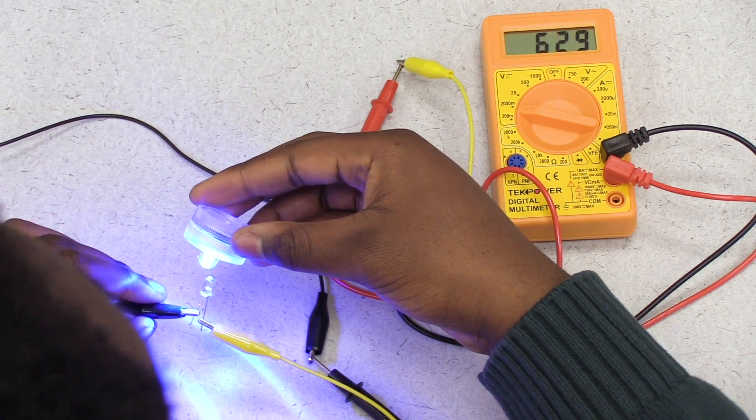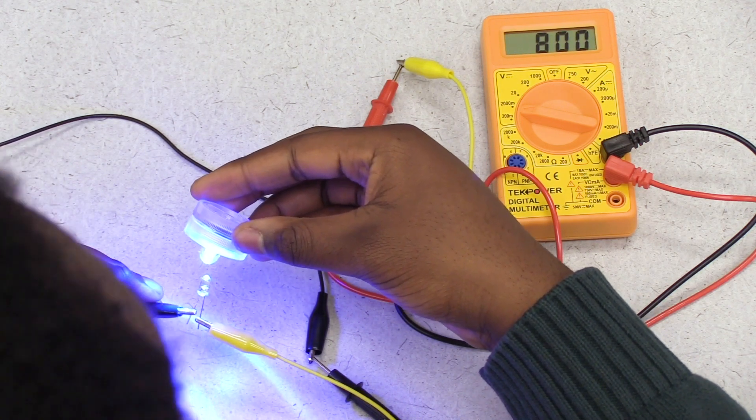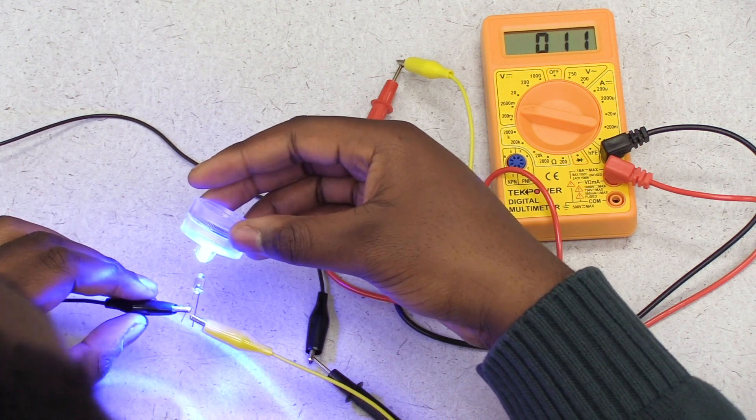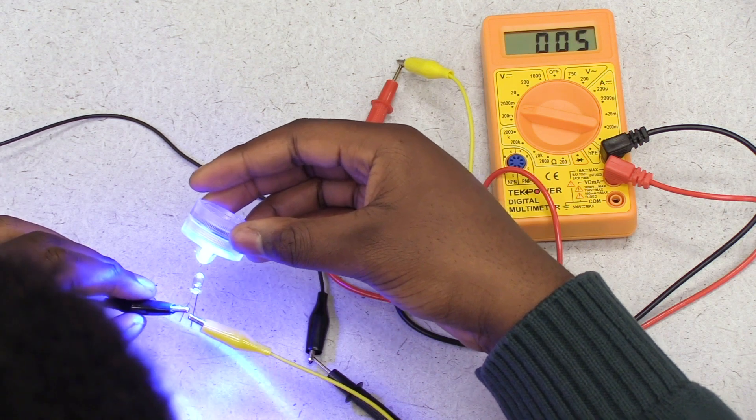Okay, as you can see our voltmeter is now measuring some non-zero value which means that this blue light has enough energy to excite electrons across its band gap.